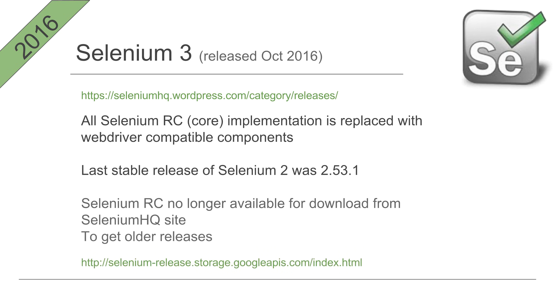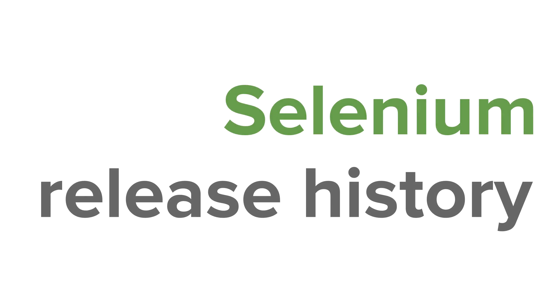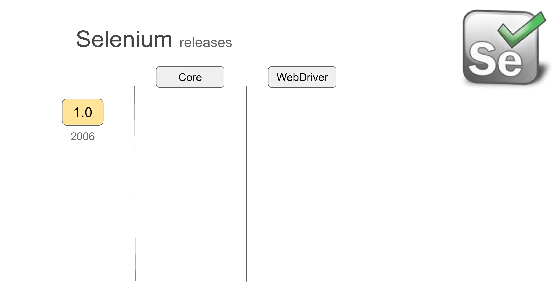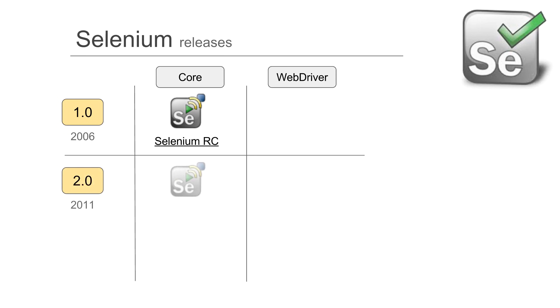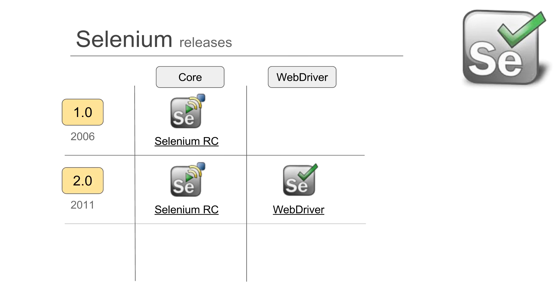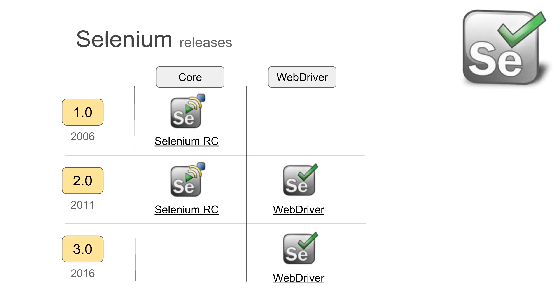You can find older releases of Selenium via the official link. Looking at the release history: Selenium 1.0 came in 2006 with Selenium Core; Selenium 2.0 arrived in 2011 with both Selenium Core being actively maintained and Selenium WebDriver added; Selenium 3.0 released in 2016 dropped the Selenium Core libraries, leaving only Selenium WebDriver being actively developed.